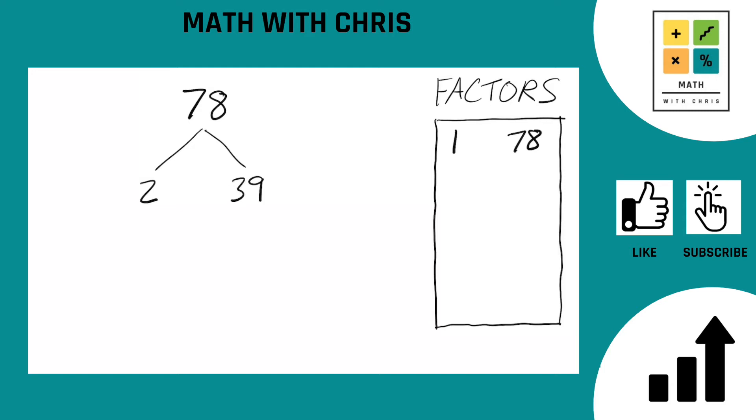So let's take a look at the two. Is two a prime number? It is. Circle it. Done. What about 39? Can you break that down any further? You can indeed. 39 is 3 times 13.